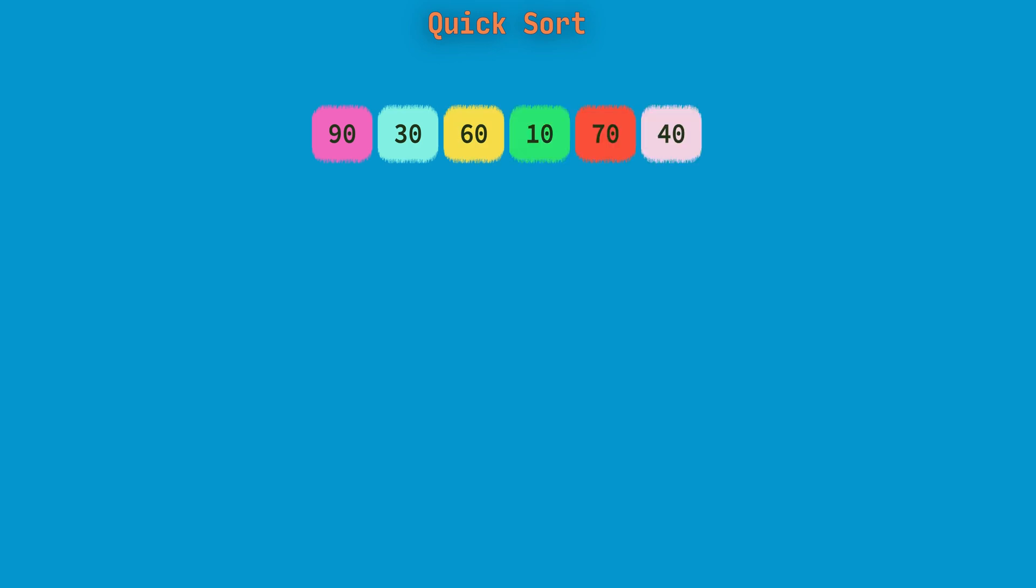Here I have taken an array with six different elements and choosing the last element 40 as the pivot element. And taking two more variables i and j, where j points to the first element of the array and initializing i with minus 1, which means it's not pointing to any element initially.